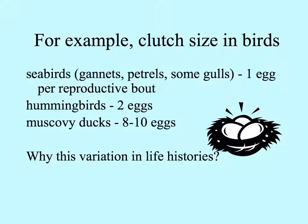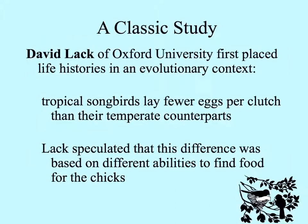Most seabirds — gannets, petrels, some gulls — lay only one egg per reproductive bout. Hummingbirds, making very tiny nests of spider web and lichens on the underside of leaves, usually have two eggs. Muscovy ducks, the kind we see around our lakes and canals here in Miami, may lay eight to ten eggs. The ornithologist David Lack of Oxford first placed life histories in an evolutionary context, looking at the differences he saw between tropical and temperate zone songbirds.